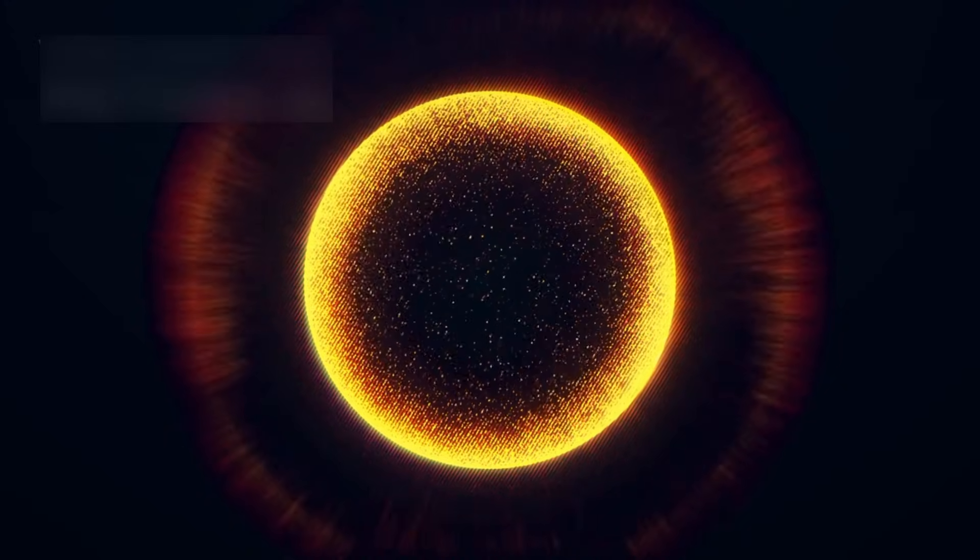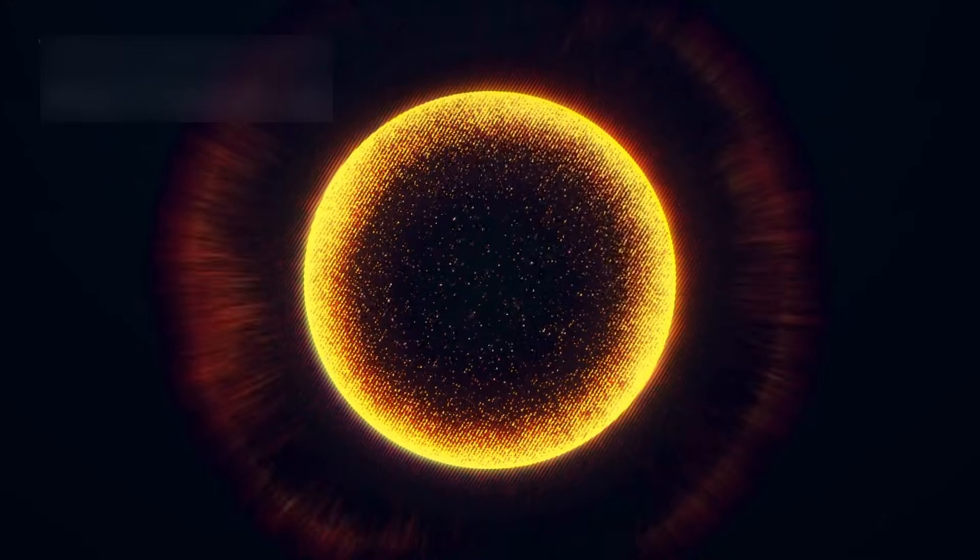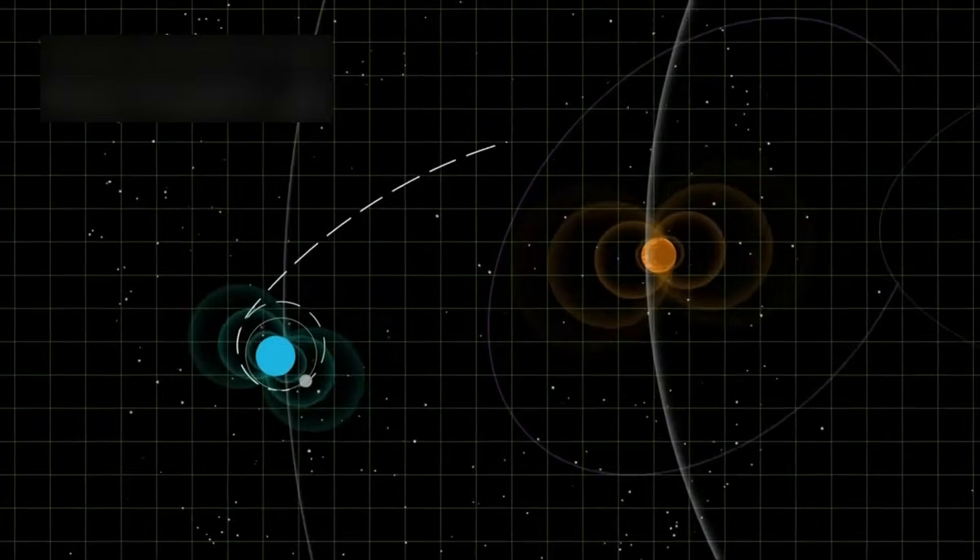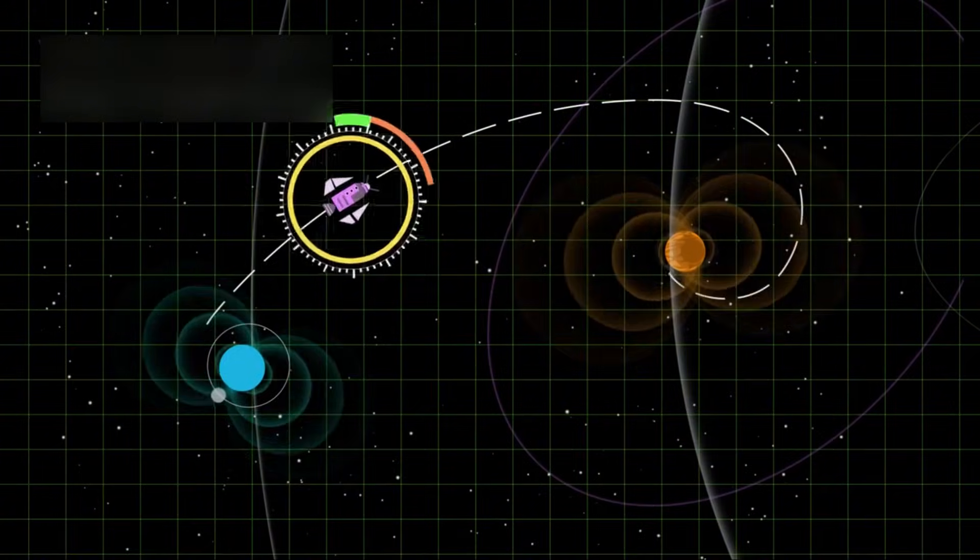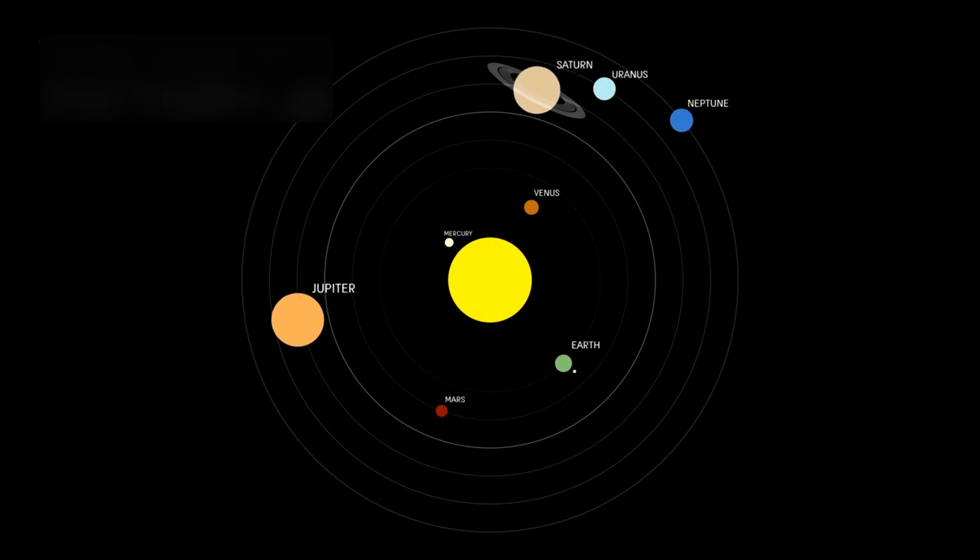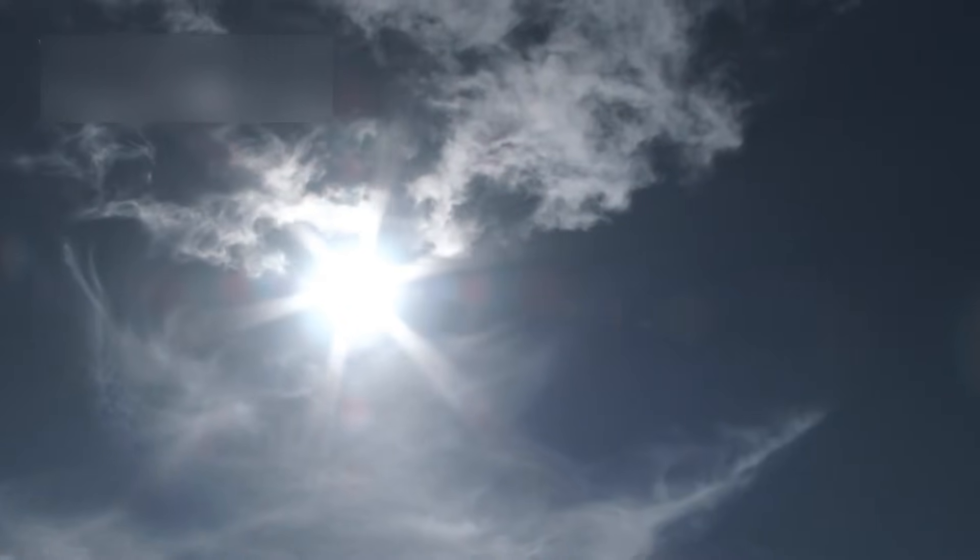Because of its unique position, Voyager 1 has helped scientists learn how interstellar winds interact with the sun's energy. The area where our solar system ends and interstellar space begins isn't fixed. It expands and contracts depending on the sun's 11-year activity cycle. When the sun is more active, the boundary pushes outward. When it's quieter, space pushes back in. This discovery has helped refine how we understand the solar system's boundary with the galaxy.